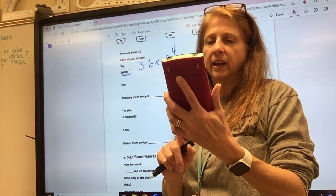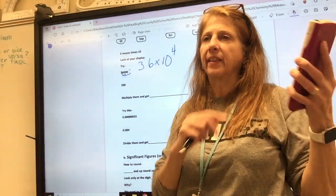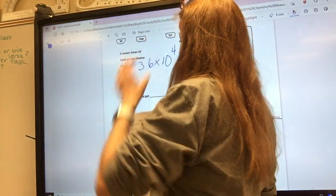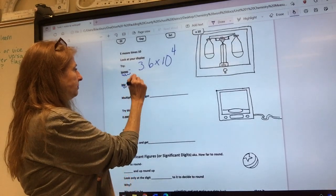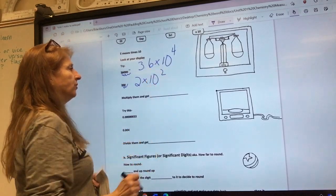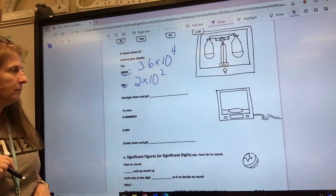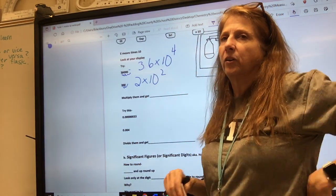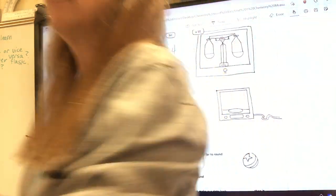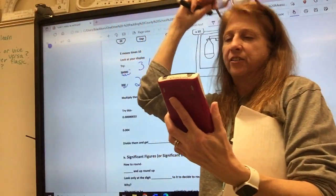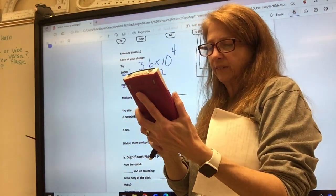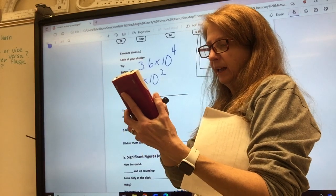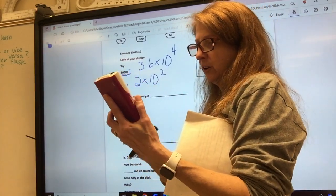Now I want you to try one. Everybody try to change 3600 into scientific notation and put it in your calculator. Let's give it a try. Count how many frog jumps it is and then try to put it in your calculator. So how many frog jumps is it? Four. Is it a big number or a little number? Big number. So is the exponent positive or negative? Positive. So it is 3.6 times 10 to the fourth power. Did you get it?